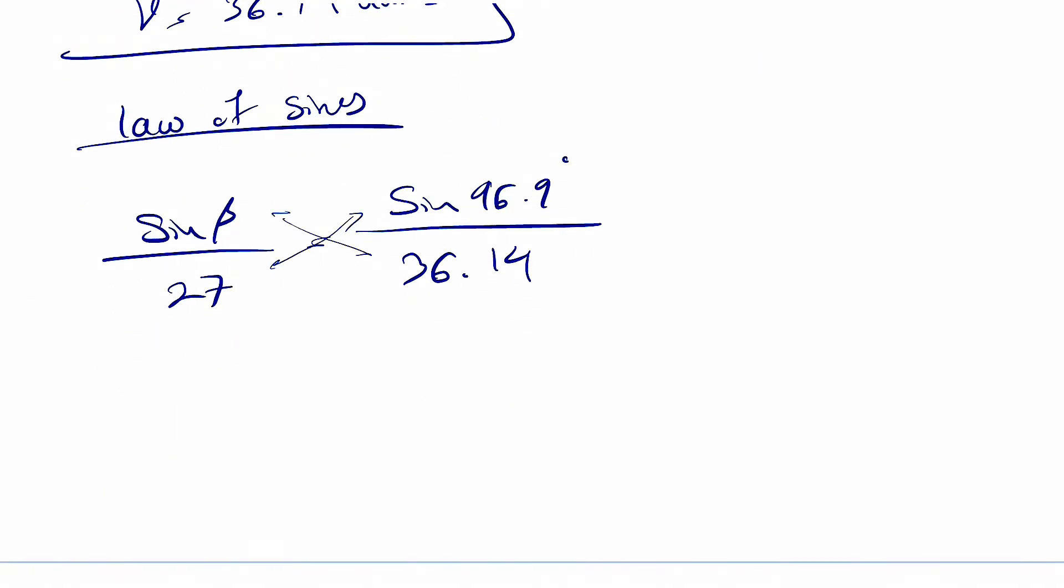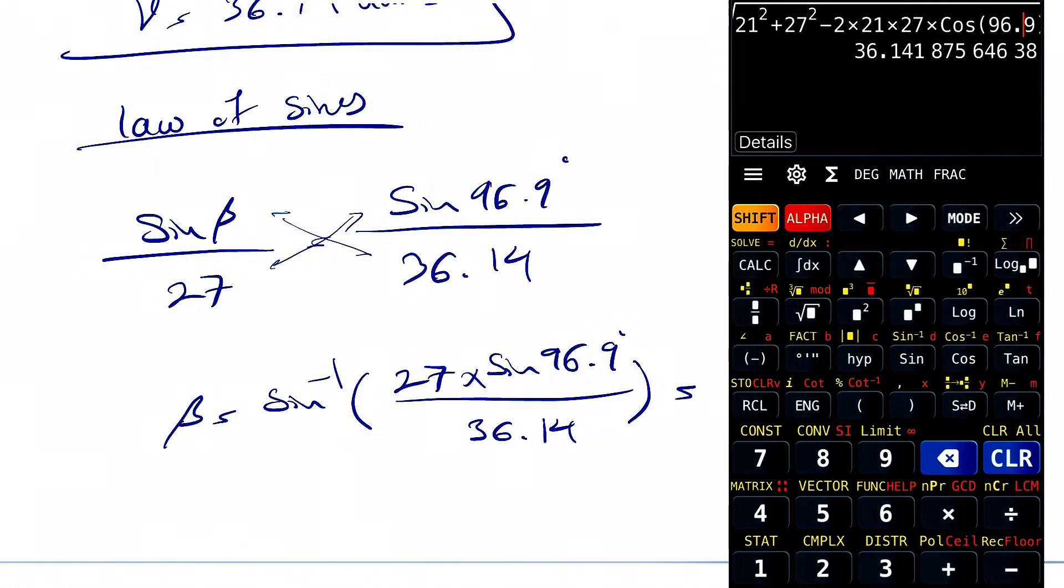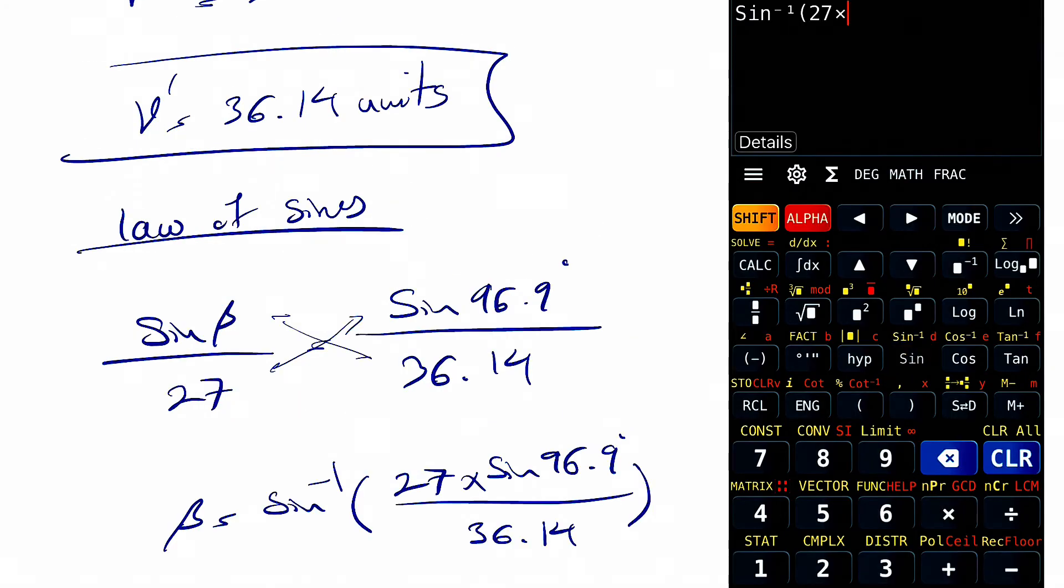So if you just cross multiply this, we should be able to find beta, which would be sine inverse of 27 times sine of 96.9 over 36.14. Let's calculate this: sine inverse of 27 times sine of 96.9 divided by 36.14. So this is going to give us 47.88 degrees.